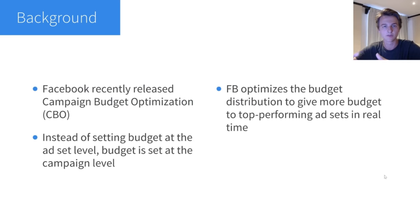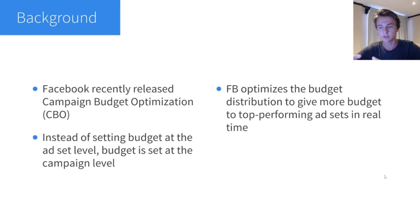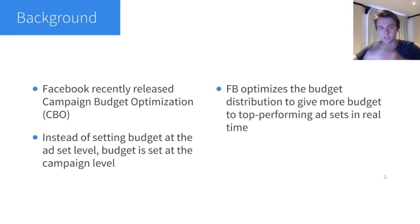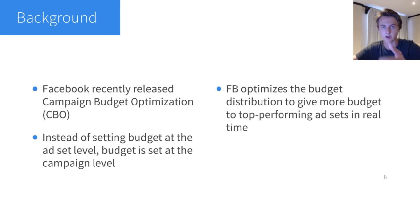I want to give you a little bit of background about this strategy. Facebook recently released a new feature called Campaign Budget Optimization, or CBO for short. Instead of setting your budget at the ad set level for each individual ad set, you set the budget for the entire campaign and then Facebook distributes your budget across ad sets based on performance in real time. You spend more on your best ad sets and less on ones that aren't performing, giving you a better return on ad spend overall.